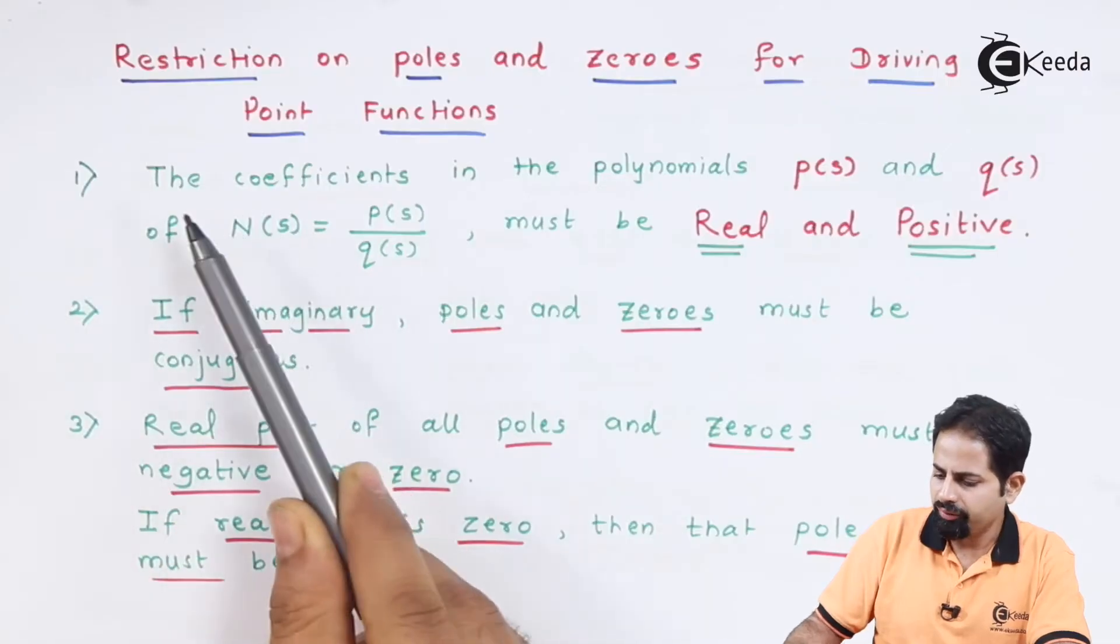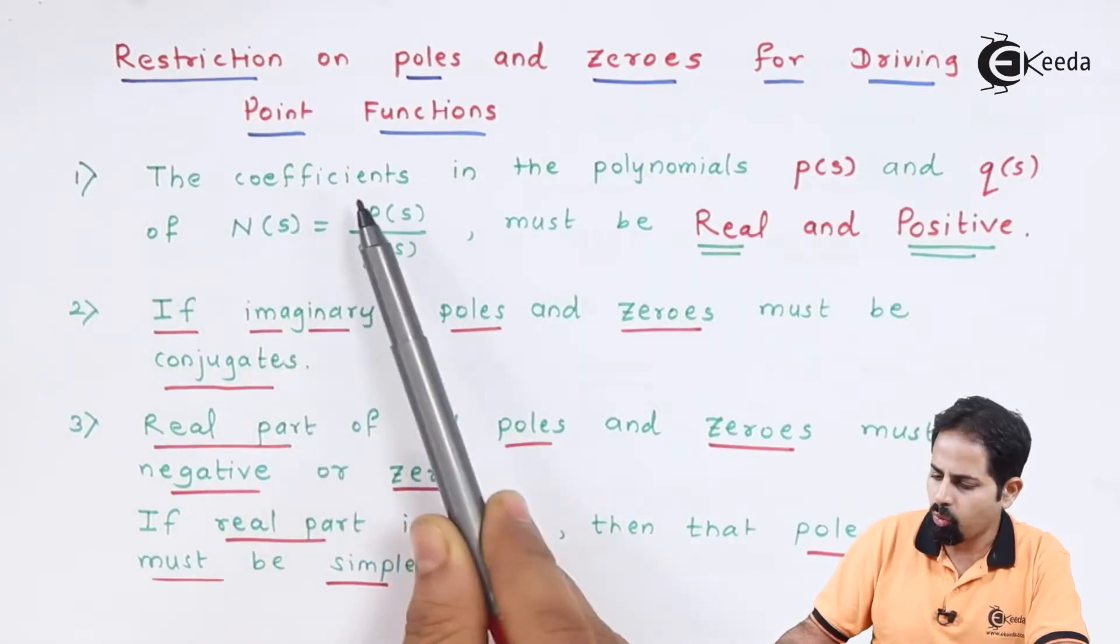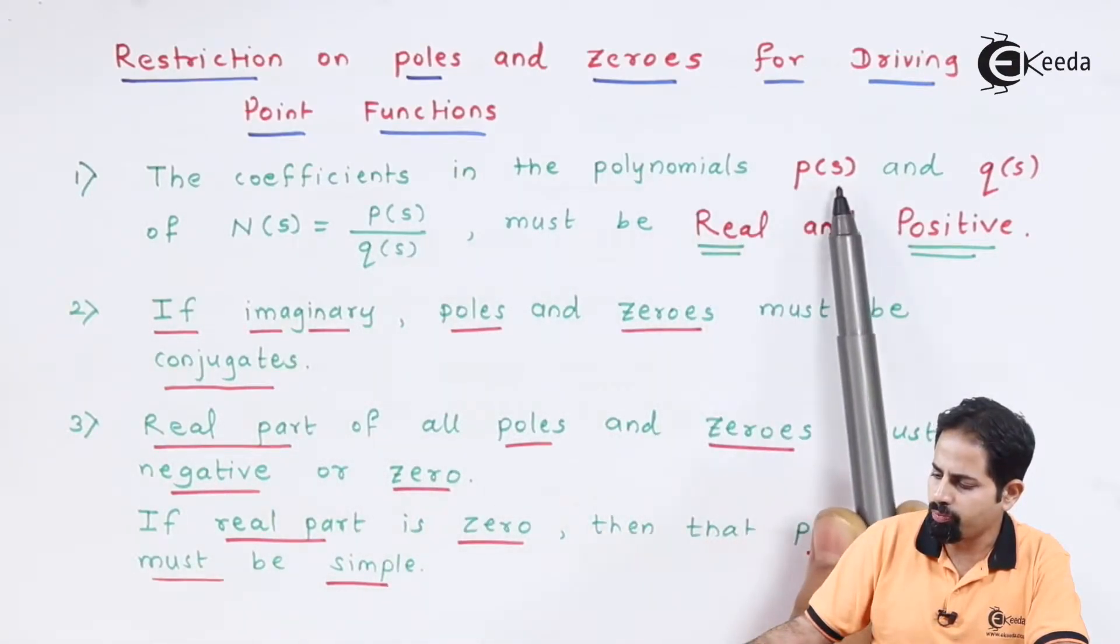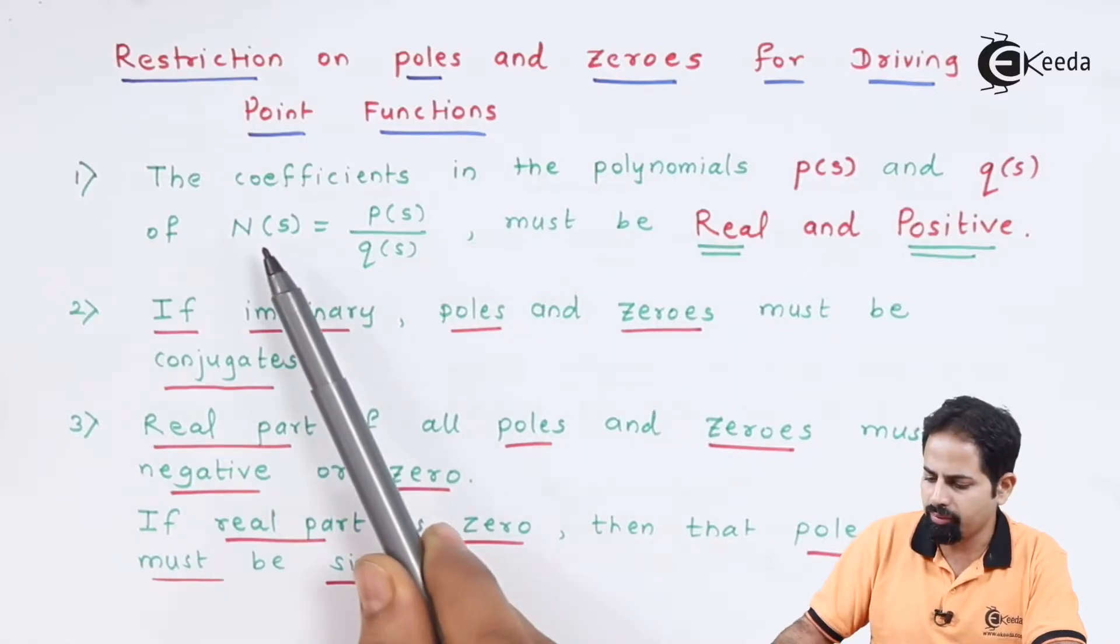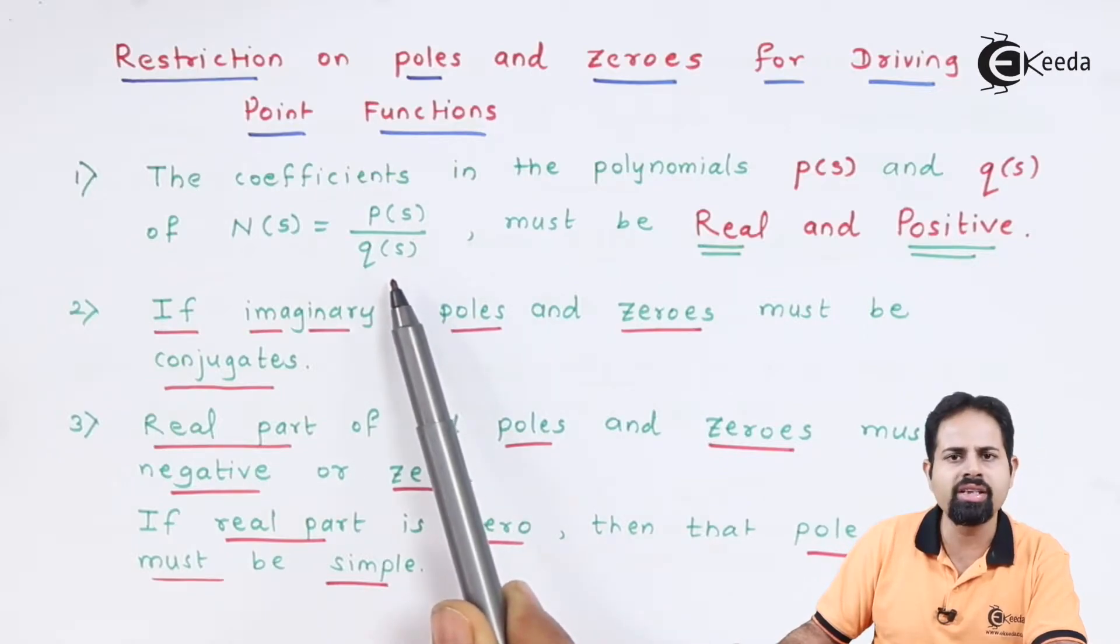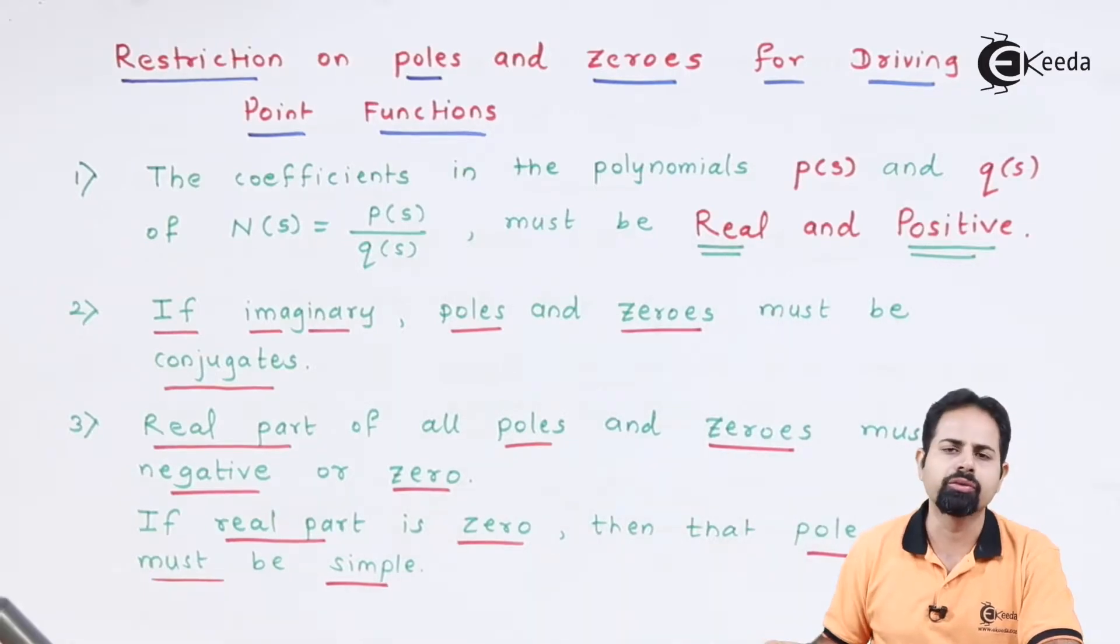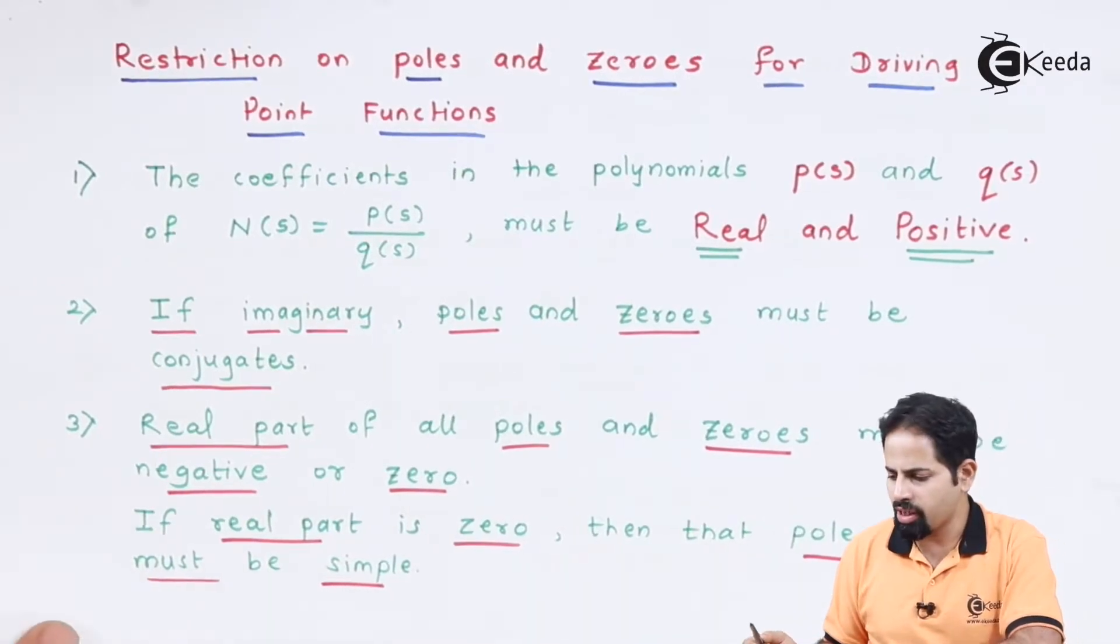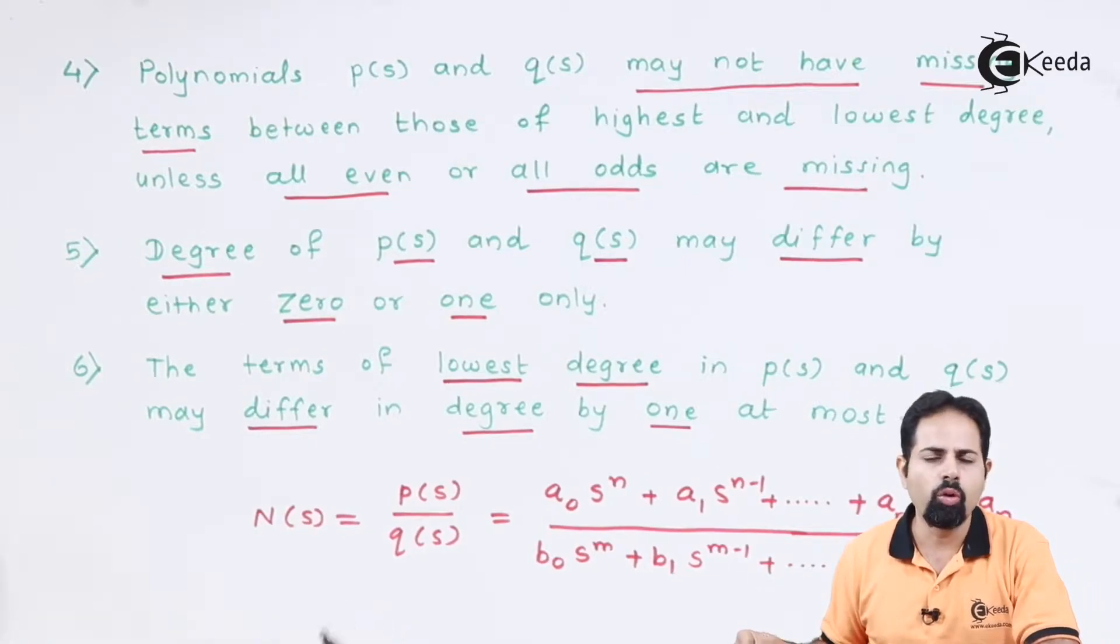We can see there is a restriction and there are certain rules. The first rule is the coefficients in the polynomial of P of S and Q of S. Now what are P of S and Q of S? They are nothing but network polynomials. One is in numerator, another one is in denominator and the coefficient must be real and positive. Now I will tell you what is P of S and Q of S. We have seen it when we saw poles and zeros.